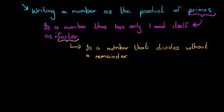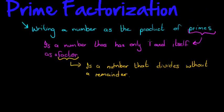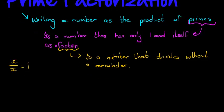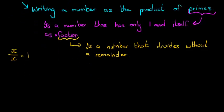A prime is a number where the only factors it has — the only numbers that can divide and not leave a remainder — are 1 and itself. 1 can divide any integer without a remainder, and any number x divided by itself equals 1. So there is nothing in between 1 and itself that can divide it without a remainder. That is a prime.